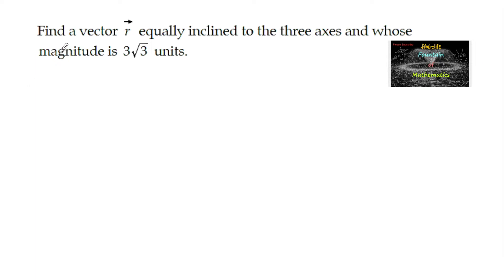Find a vector r equally inclined to the 3 axes and whose magnitude is 3√3 units. Since the vector is equally inclined to the 3 axes, the direction cosines are equal. If l, m, n are the direction cosines of the vector.